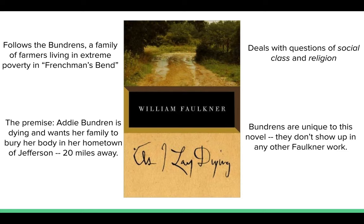The premise of the novel is basically this: Addie Bundren, the mother of the family, is dying, and her final wish is that her family returns her to the city of Jefferson, many miles away, in order that she be buried there. The novel addresses issues of social class and is one of Faulkner's only novels that focus on the extremely poor. What's interesting is that although it takes place within Yoknapatawpha County, the Bundren family is unique only to this novel — they don't show up in other novels, and none of the events here show up anywhere else. So As I Lay Dying is one of his self-contained stories about an isolated family set in a world Faulkner otherwise took great pains to make interconnected.